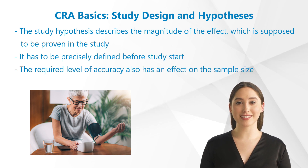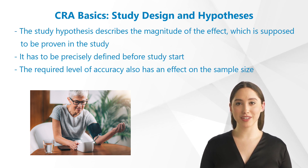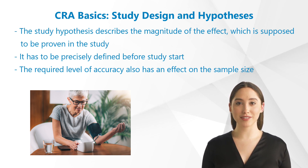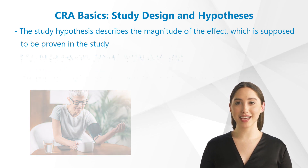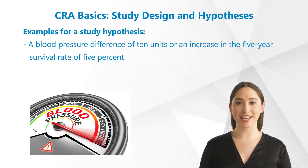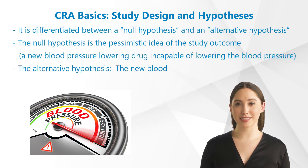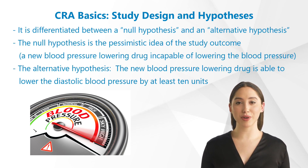The study hypothesis describes the magnitude of the effect which is supposed to be proven in the study. This hypothesis has to be precisely defined before the study starts as well. The required level of accuracy also has an effect on the sample size needed in the study. Examples for a study hypothesis are a blood pressure difference of 10 units or an increase in the five-year survival rate of 5%.